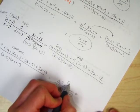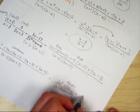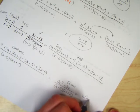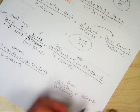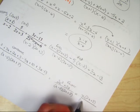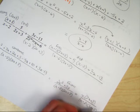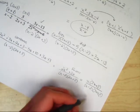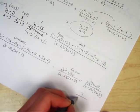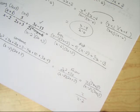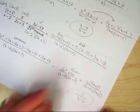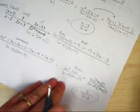Factor the top if you can, in this case we can pull out an x. You get 2x plus 3 over x minus 2, 2x plus 3. The 2x plus 3's cancel out and you're left with x over x minus 2.